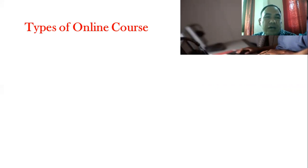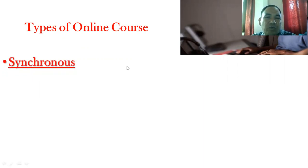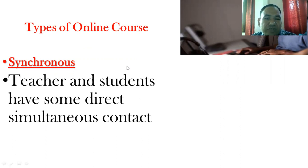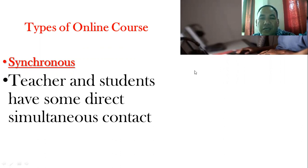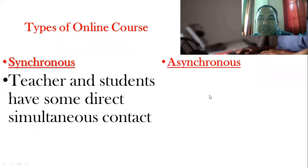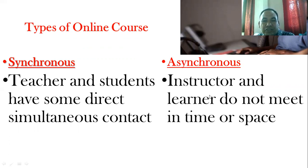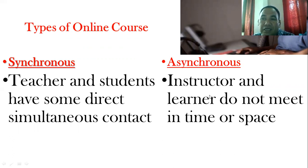In online education, synchronous learning is one key feature, where the teacher and student have direct and simultaneous contact. The next type is asynchronous learning, where the instructor and learners do not meet at the same time or space, meaning there is no frequent or continuous communication between teacher and learner.